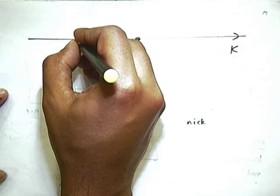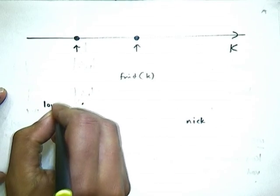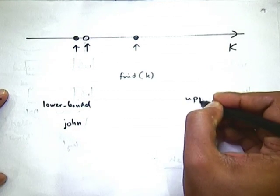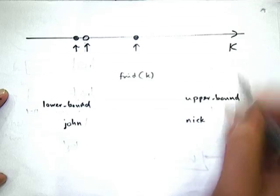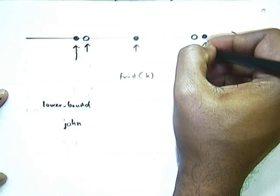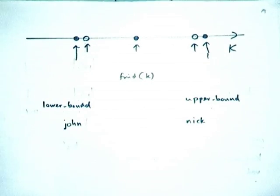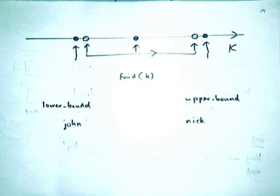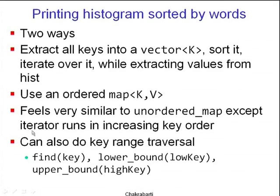If John exists, the iterator will be positioned at John if you call lower_bound instead of find. If John does not exist, the iterator will be positioned on the very next larger key. Similarly, if you call upper_bound with argument Nick: if Nick exists the iterator is placed there; if Nick does not exist, the iterator will be positioned on the previous key before Nick. If you get two iterators like this, you can iterate between them just like between begin and end. Those are find, lower_bound, and upper_bound — find a key, find the lower bound on a low key, and find the upper bound on a high key.